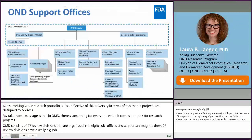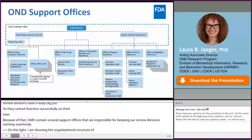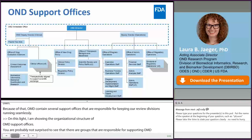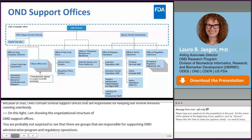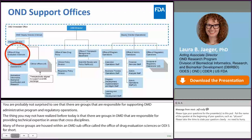On this slide, I'm showing the organizational structure of OND's support offices. There are groups responsible for supporting OND's administrative program and regulatory operations. But there are also groups in OND responsible for providing technical expertise in areas that cross disciplines. Many of these groups are housed within an OND sub-office called the Office of Drug Evaluation Sciences, or ODES for short. ODES contains four technical support groups with expertise in clinical outcomes assessment, biomedical informatics, biomarker qualification, and research.